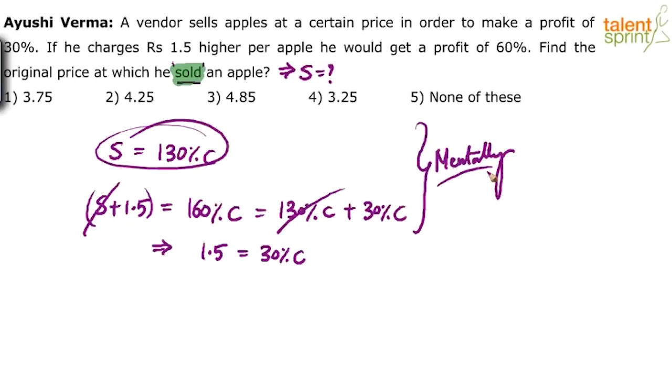But what is he asking us to find out? He is asking us to find out the selling price S, which is 130%. So if 1.5 is 30%, 130% is equal to what? 130% of the cost price is equal to what? Cross multiply. He is asking us to get S. S is the question mark, but it should be equal to 130%.